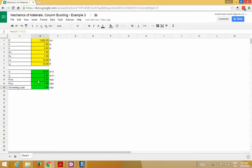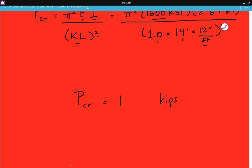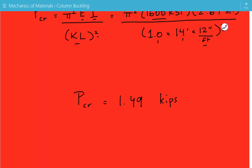But in the spreadsheet, I just calculated the critical buckling load about both axes. In any case, the answer will be the same. The governing load is the smaller value, and it's 1.49 kips. This is the end of this example.